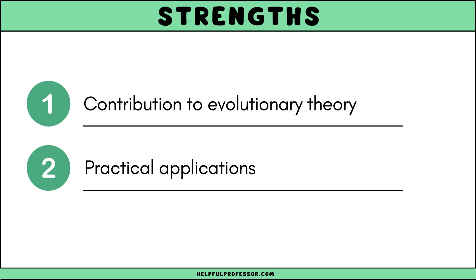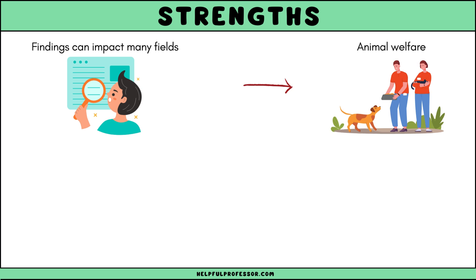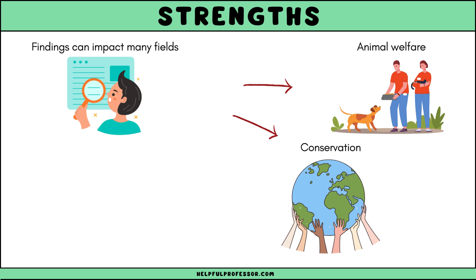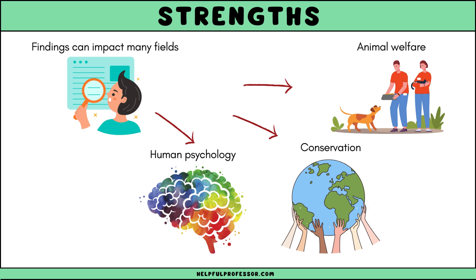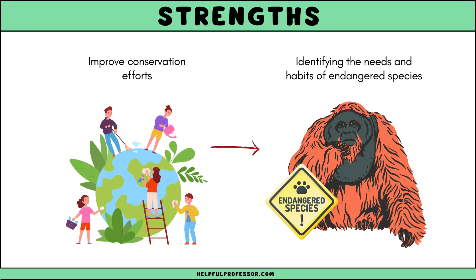Another strength is the practical applications of comparative research. Findings from comparative psychology can inform various fields such as animal welfare, conservation, and human psychology. For example, understanding animal behavior can improve conservation efforts by identifying the needs and habits of endangered species.